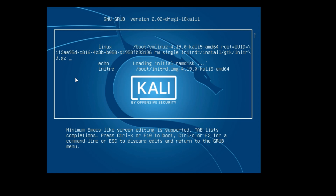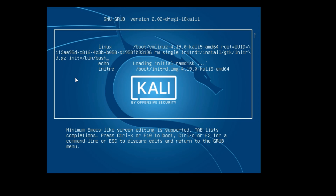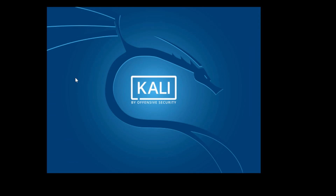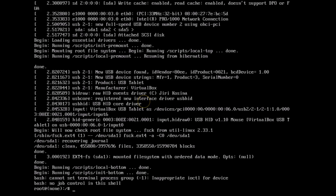After replacing 'ro' with 'rw', move to the end of the line, hit the Space key, and then type: init=/bin/bash. After that, press F10 on the keyboard. If you are using a laptop, press the Function key plus F10. The system will now boot into a root shell.